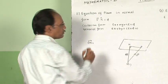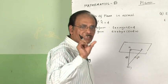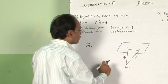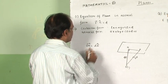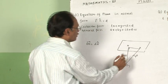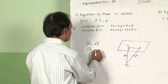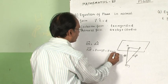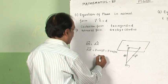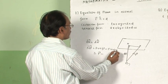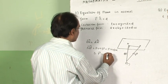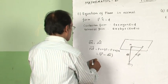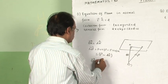To get any vector, first of all you have to take a unit vector in the direction of that vector. The length is given as D, so the vector ON is given by D·n̂. The vector NP is given by the position vector of P minus the position vector of N, which is r minus D·n̂. Since these two vectors are perpendicular to each other, ON dot NP is equal to 0.